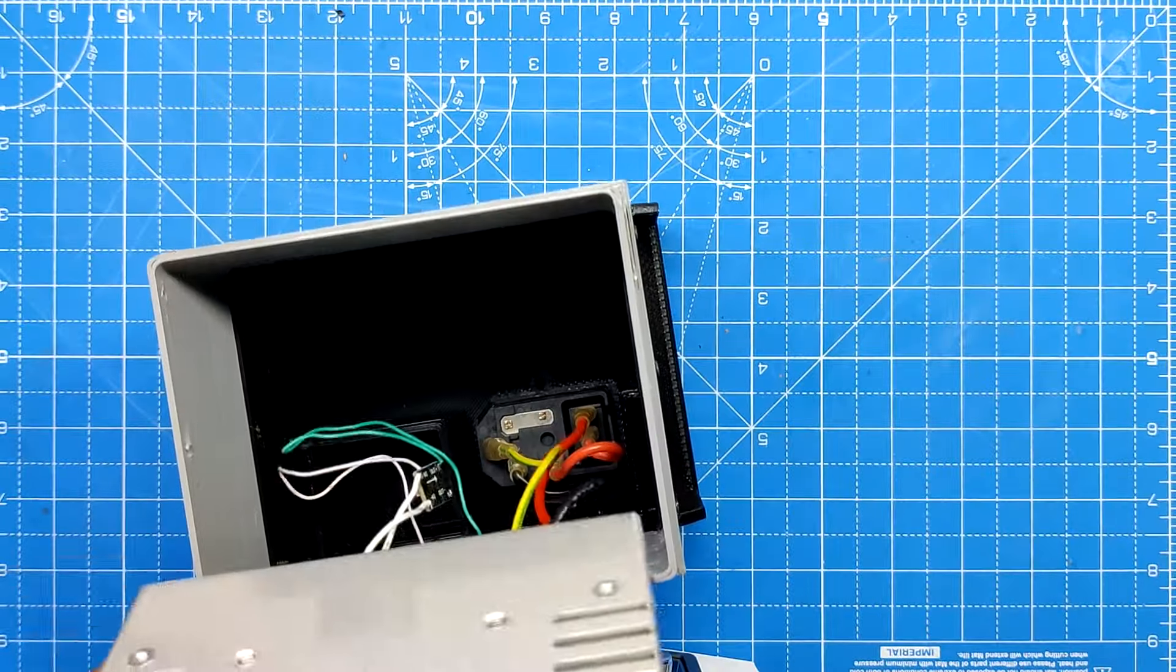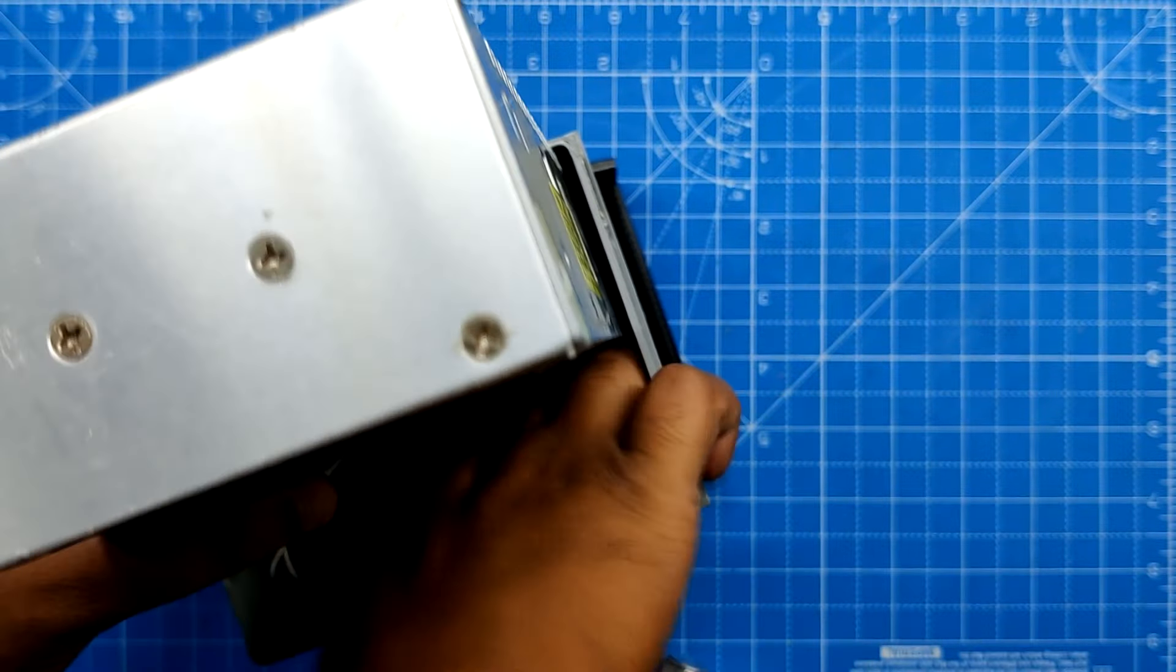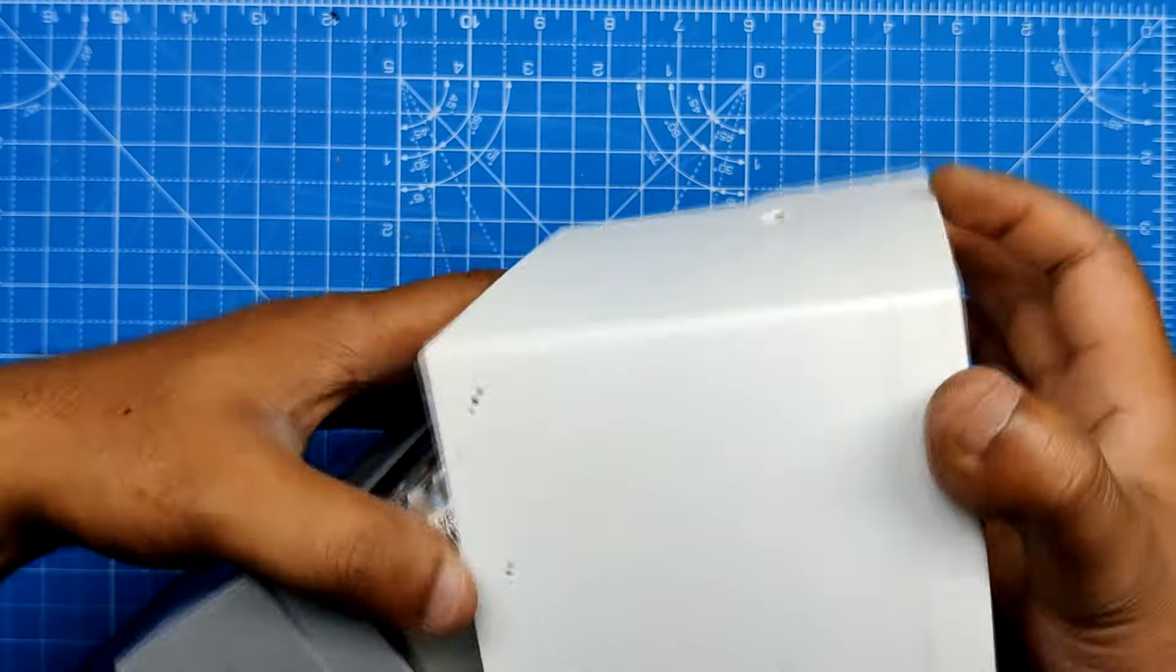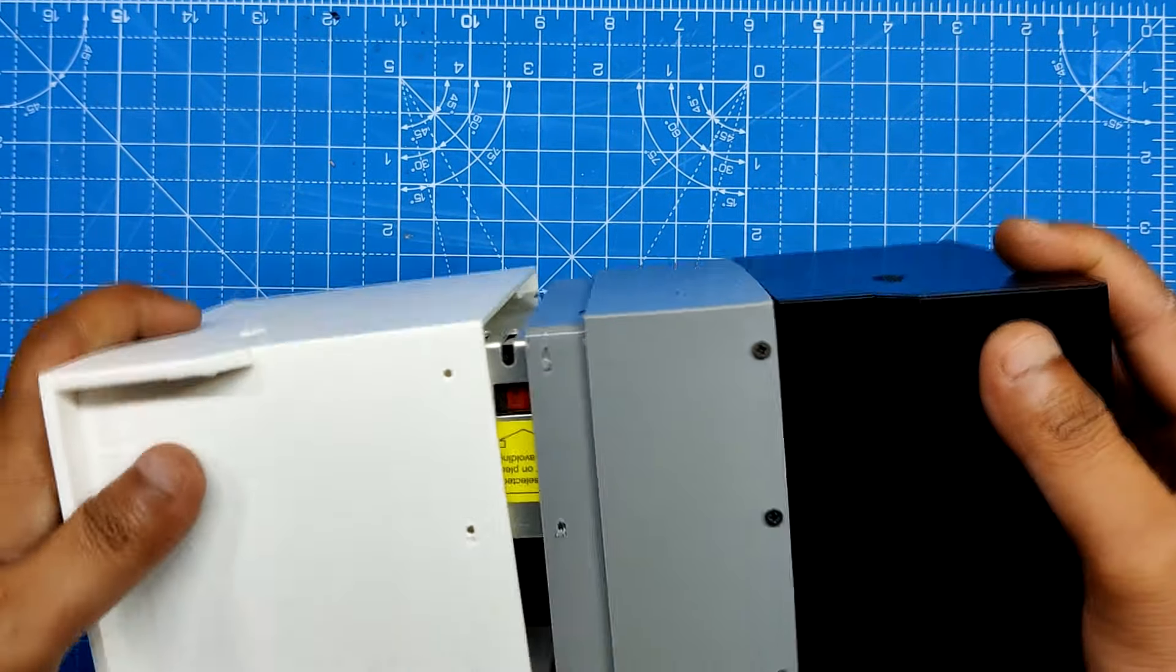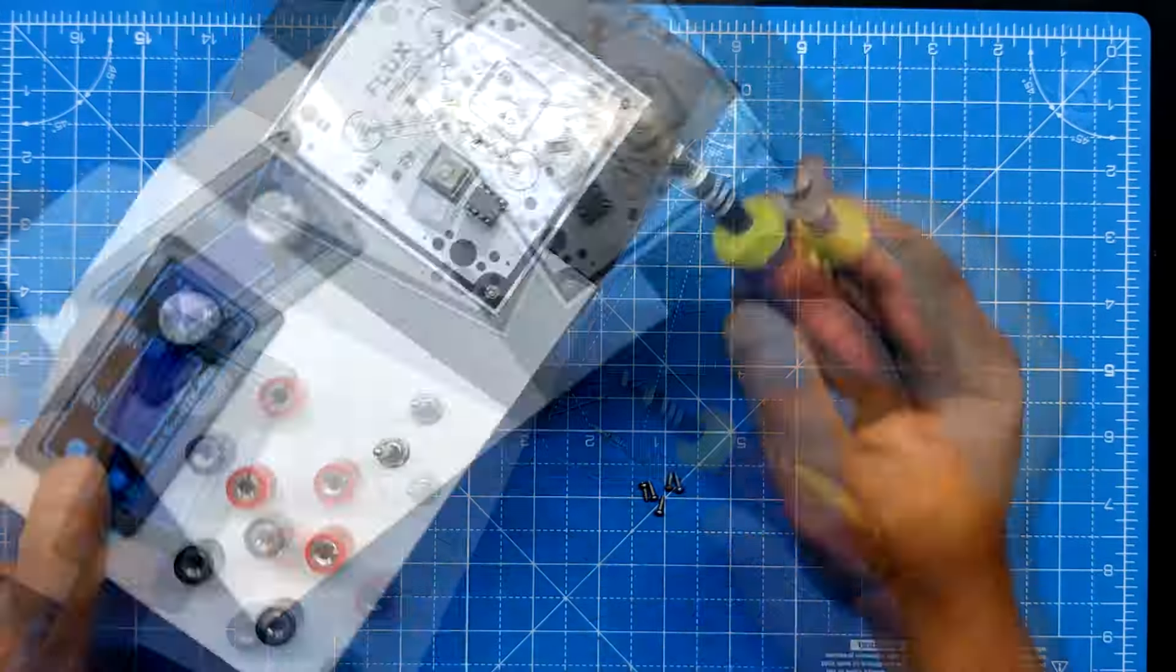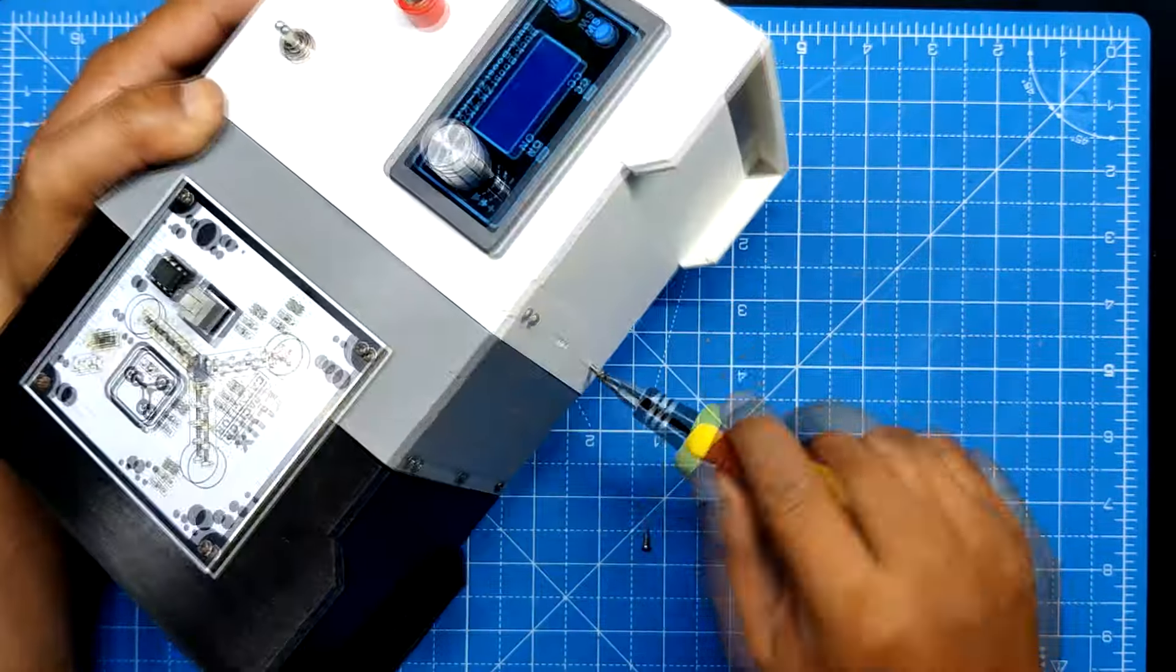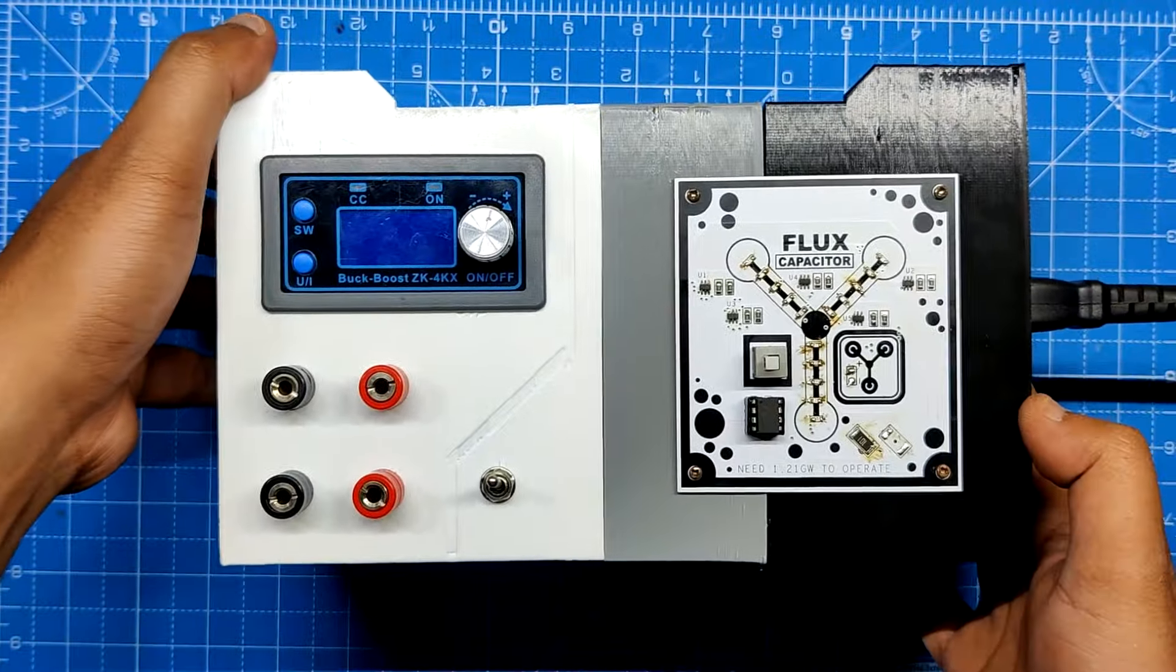We now slide the SMPS into the power input section. On the opposite side, we added the output section on top of the power input section. The SMPS is now secured between these two sections. Next, we use six M2 screws to attach both sections together. The assembly is now completed.